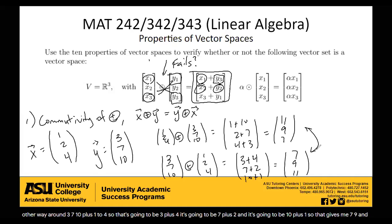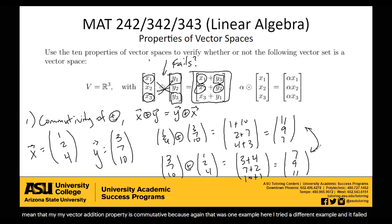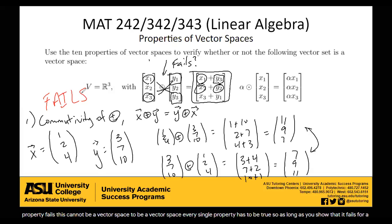These two results are different — (11, 9, 7) versus (7, 9, 11) — so the commutativity property failed this time. Even though it worked for the first example, it failed for the second. Because this property doesn't hold for every single vector, it automatically fails. And because commutativity fails, this cannot be a vector space. To be a vector space, every single property has to be true, so as long as one property fails, you automatically know it's not a vector space — we don't even have to check any other properties.